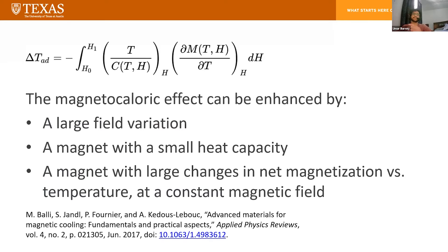I have an equation here that shows the change in adiabatic temperature. This equation shows that the magnetocaloric effect can be enhanced by a larger magnetic field variation, a magnet with large changes in magnetization versus temperature at constant field, and also if your magnet has a small heat capacity.